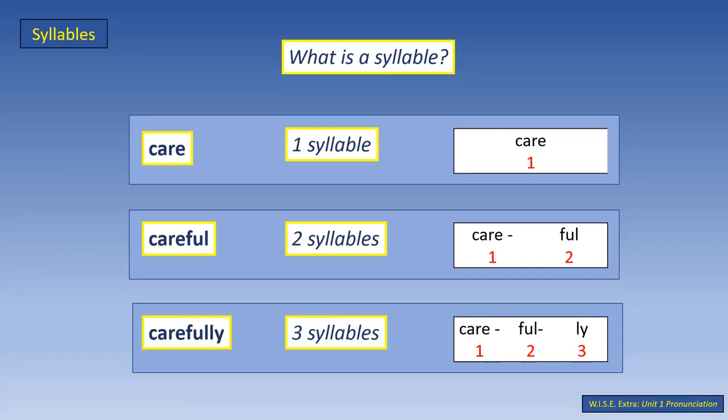Syllables. English words are split into syllables. Each syllable has a vowel sound. For example, 'care' has one syllable, 'careful' has two syllables, and 'carefully' has three syllables.